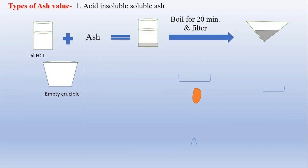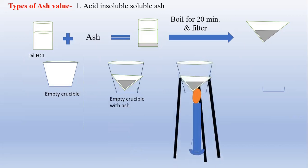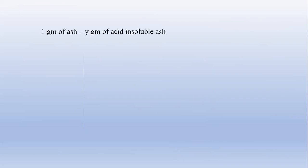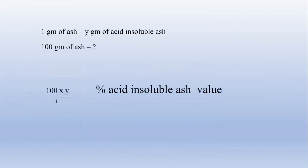We have to check how much quantity of the acid insoluble ash remains. The ash which remains on the ashless filter paper — just pick it up and place it in a crucible. Then heat that particular mixture on a Bunsen burner at a blue color clean flame until complete ash is formed. Allow it to cool, then take the weight of the crucible with ash. For calculation: if you have taken 1 gram of the ash, you obtain y grams of acid insoluble ash. If 100 grams of ash were taken, that gives the percentage acid insoluble ash value.